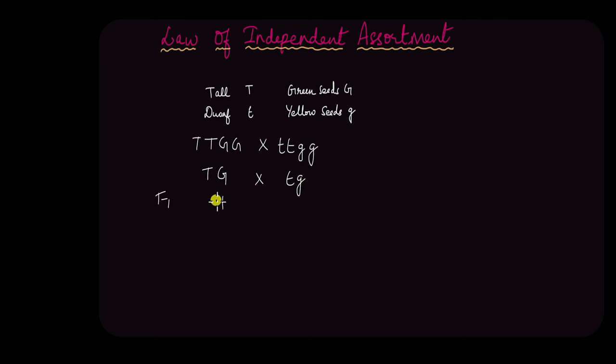In the F1 generation, all plants would have this genotype that was heterozygous, and because tall trait and green seed traits are dominant over dwarf traits and yellow seed traits, all plants in the F1 generation would be tall and green seed color producing. So this is what he observed in the F1 generation.